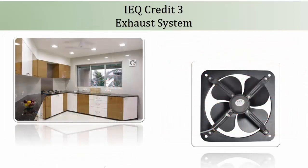IEQ Credit 3: Exhaust Systems. This is the third credit of the section and offers 2 points. The points are awarded if exhaust systems are provided in the kitchen and bathrooms. The CFM requirement for the exhaust system, to be designed according to the space area, is given in the IGBC Green Home Guideline under the same credit. Points will be awarded if the project team meets the requirement.